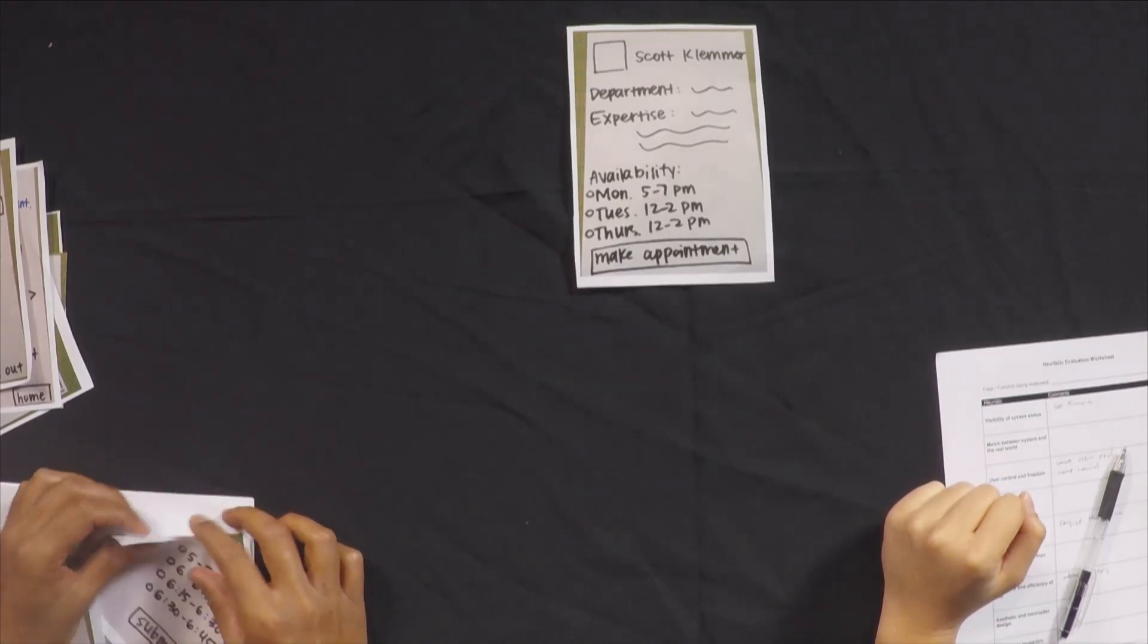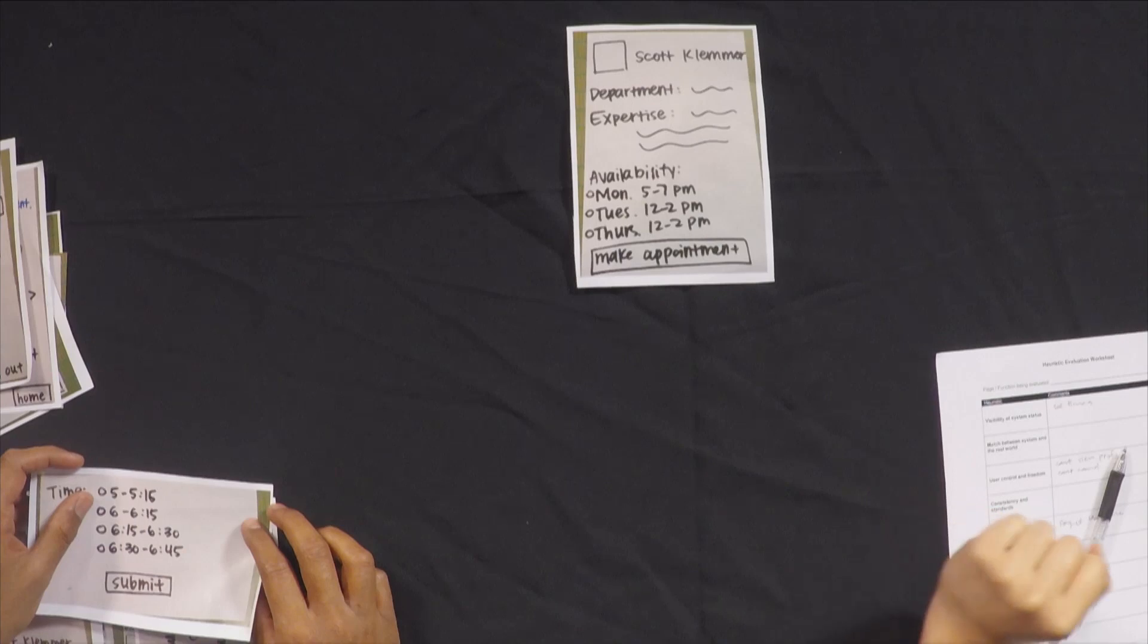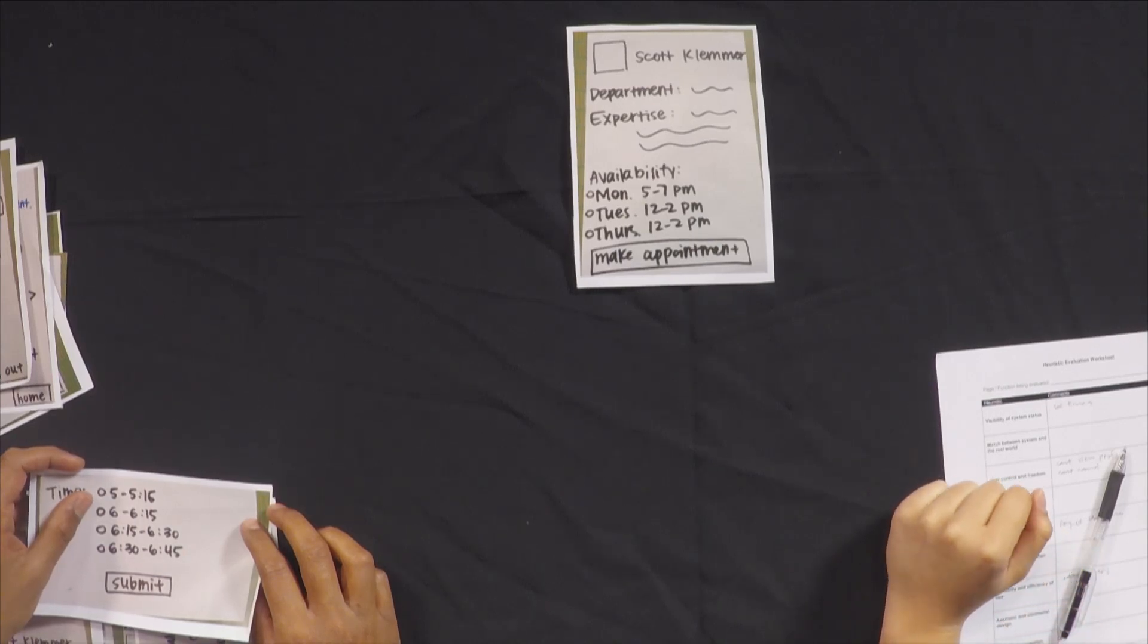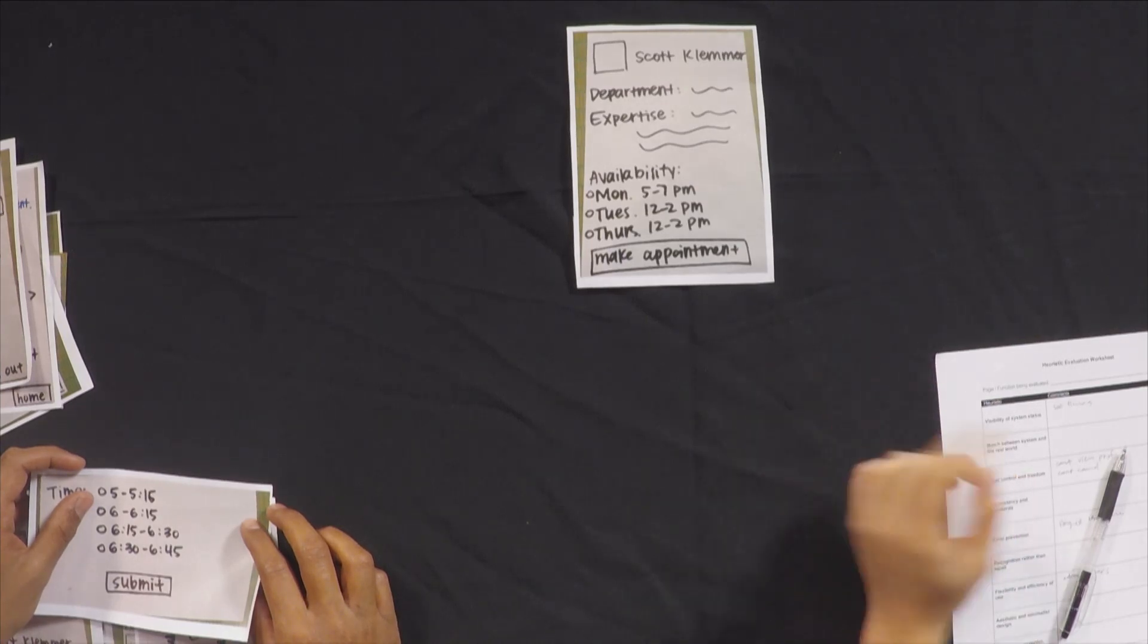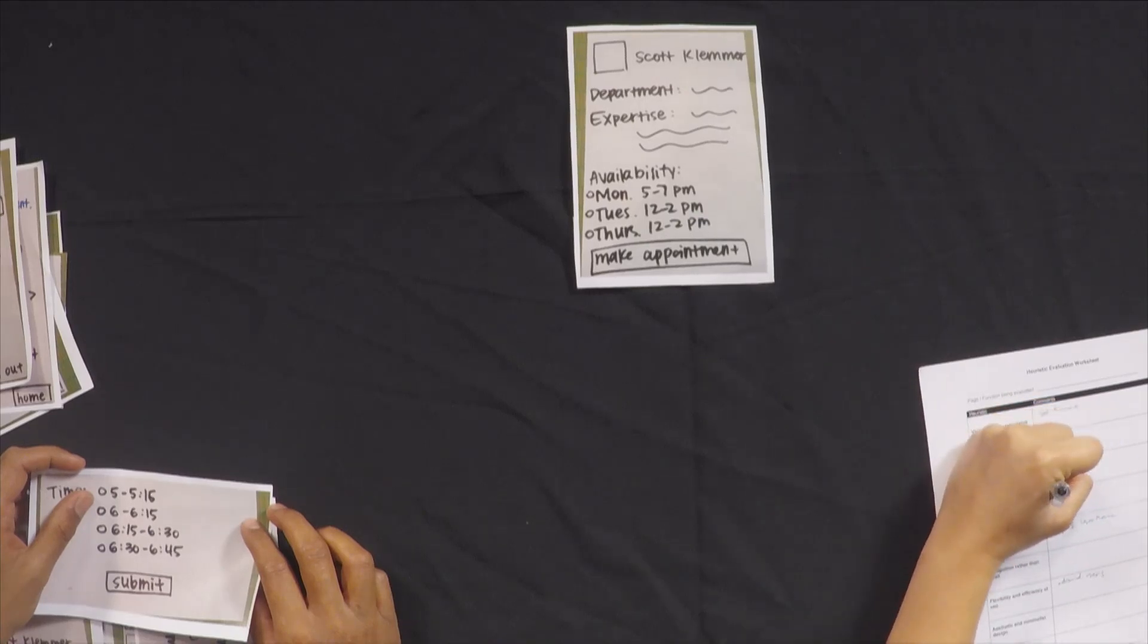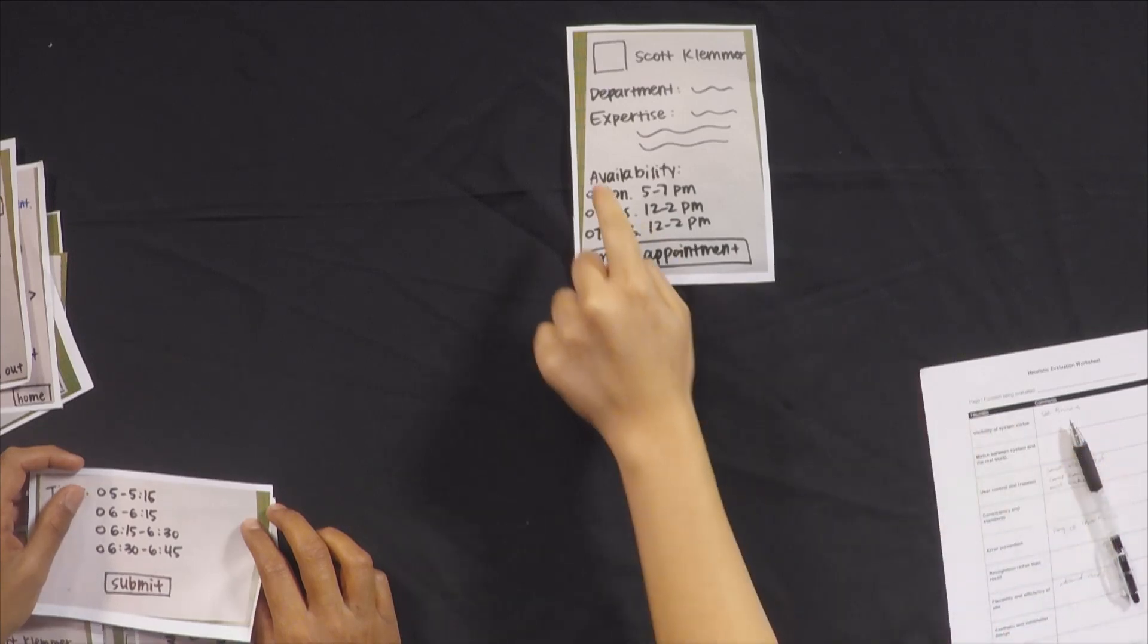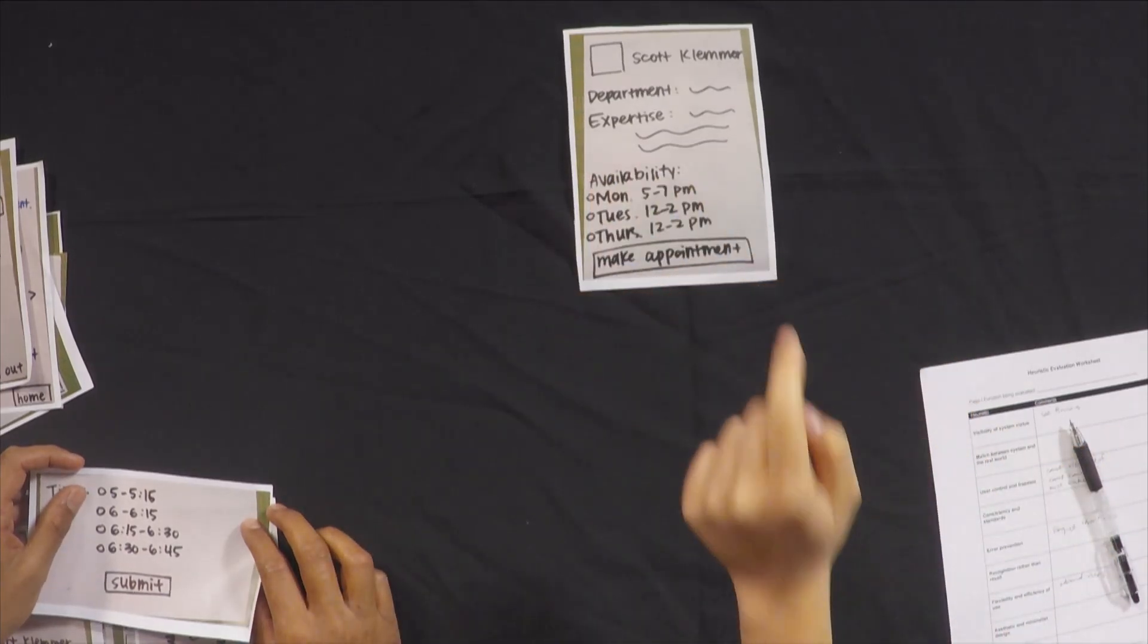Let's see. So this is his profile. Well, actually, if I didn't want to make an appointment with him, it looks like there's no way to go back or to cancel. So that's another problem of user control and freedom that I must make an appointment now. So I guess I'll make an appointment for Monday, 5 to 7 p.m. And make an appointment.